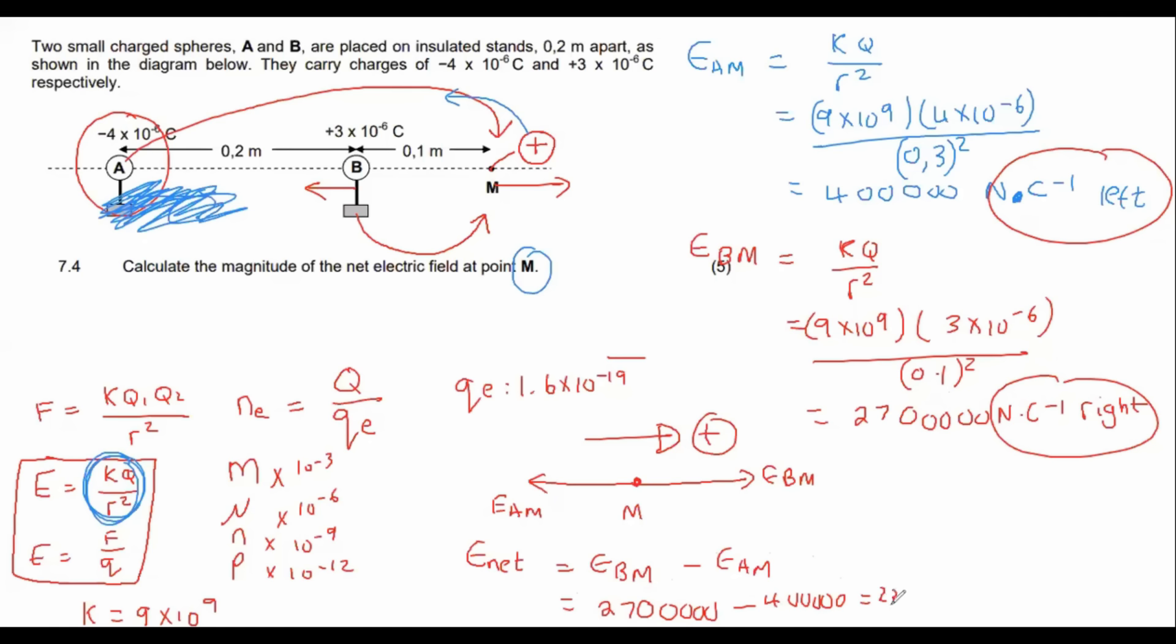And that should give us two point three. But let me just make sure. Yeah. 2,300,000 N dot C to the right. Okay. Don't put the exclamation mark. We're not trying to shout at anyone yet. Just to the right.